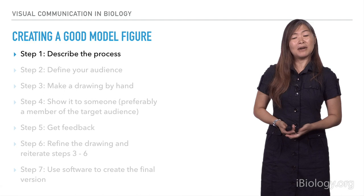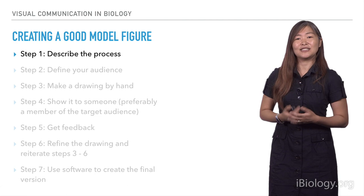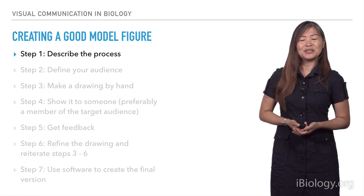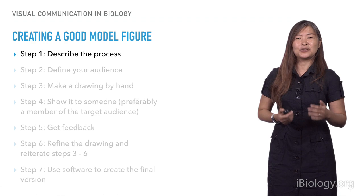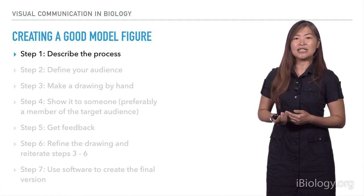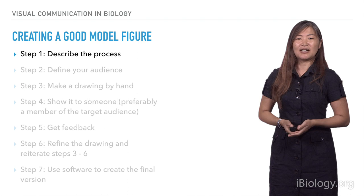I wanted to talk about model figures and how to think about a process that allows you to create a very effective model figure. The first step — and this is the same process I use with my collaborators — is to really describe the process. What is happening? Where is it in the cell? How many proteins are there? Which proteins? I'm really trying to get into as much detail as possible, but also thinking about that figure legend — preferably writing it down and sharing it with others.